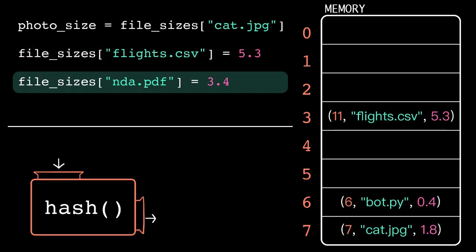Now, we add a new item to the dictionary. But, do you see any problems with this key? nda.pdf has the same hash as another one of our keys. We call this a collision.